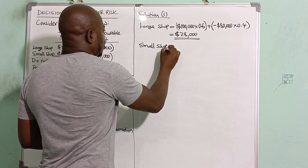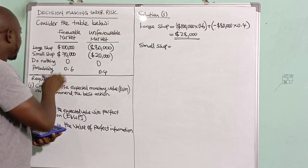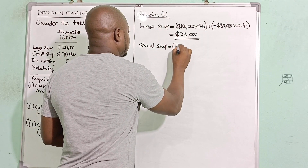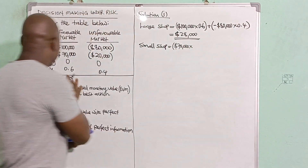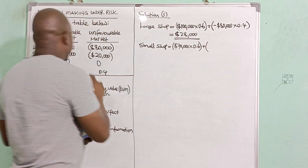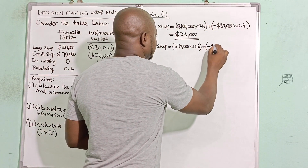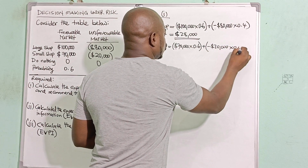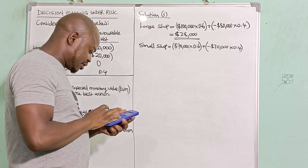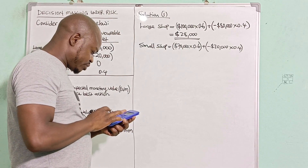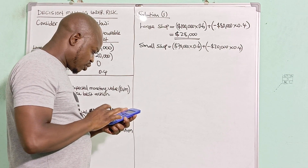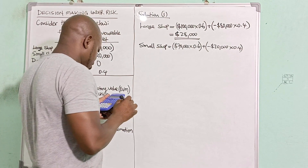For the small shop: under favorable market I have $70,000 with probability 0.6, and under unfavorable market negative $20,000 with probability 0.4. Processing this: (70,000 × 0.6) + (−20,000 × 0.4) gives $34,000 as the expected monetary value for the small shop.